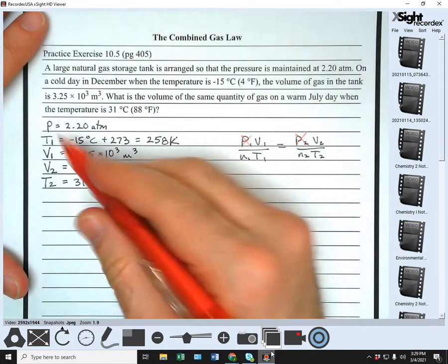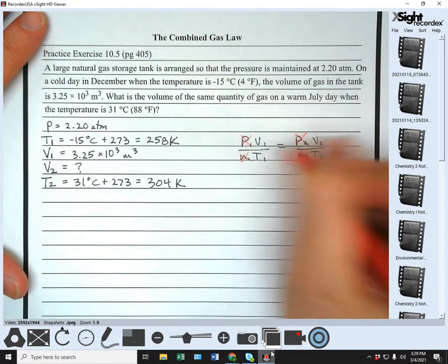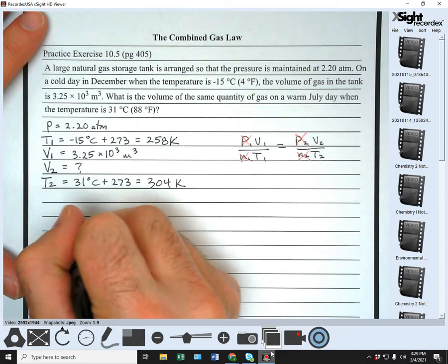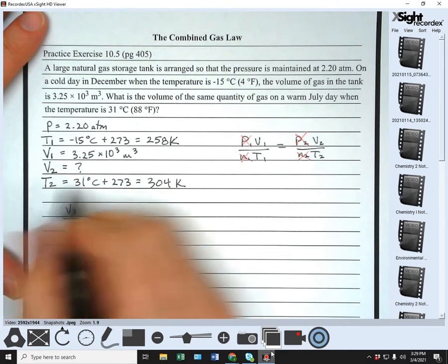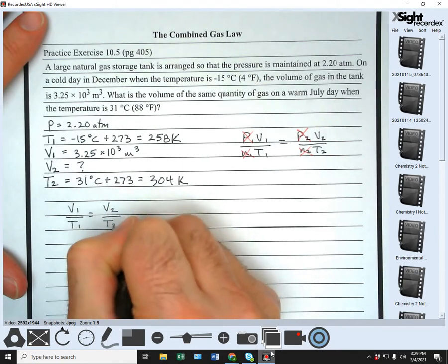The temperature changes, the volume changes, the number of moles do not. So our equation comes out being V1 over T1 equals V2 over T2.